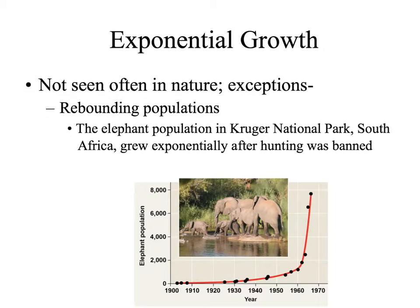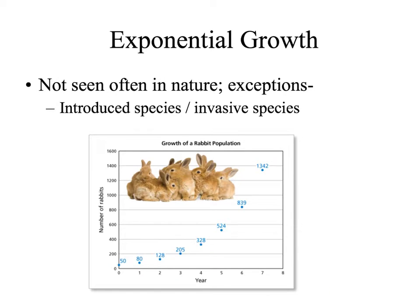There are times when we see exponential growth in nature, at least for a short period. One example is rebounding populations — this elephant population in South Africa grew exponentially after hunting was banned in that area. Introduced or invasive species will also increase exponentially, at least for a time. A good example was rabbits introduced into a new environment; they bred rapidly and their population skyrocketed at an exponential rate.